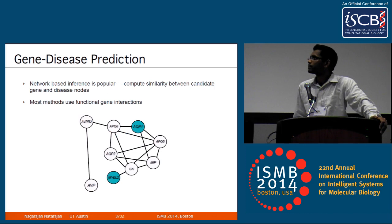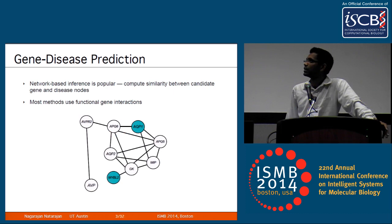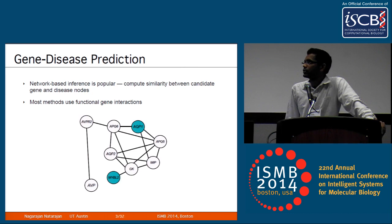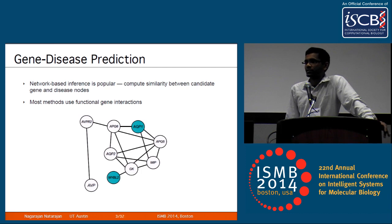So far, people have conceived of network-based approaches. The connections between different genes are known to play a very important role in predicting gene-disease connections. For example, if AQP1 interacts often with AQP6 and AQP5, and one of those genes is responsible for diabetes, then you might suspect AQP1 is also responsible because these three genes form a functional unit.